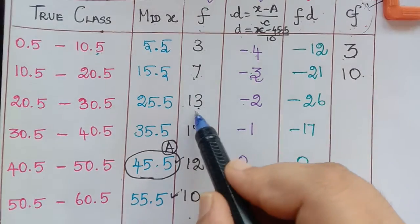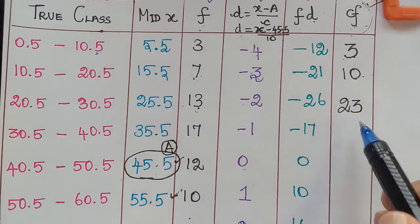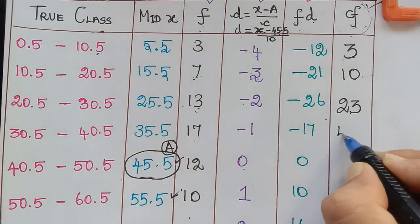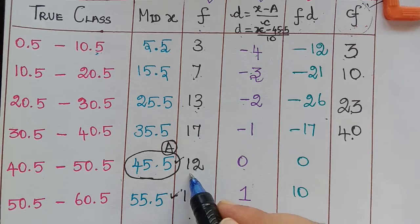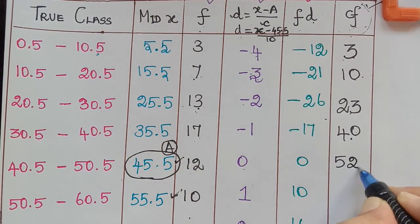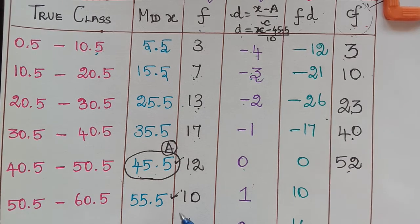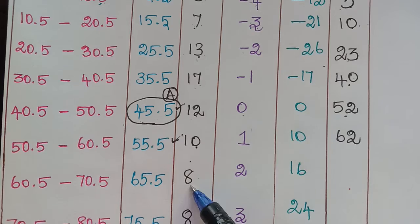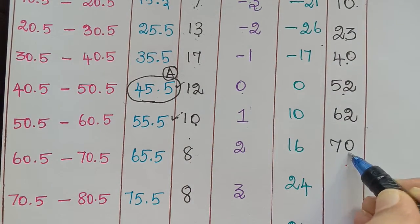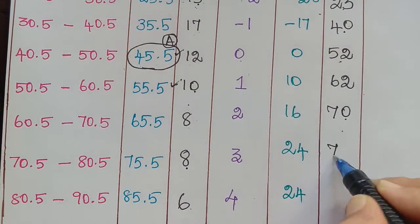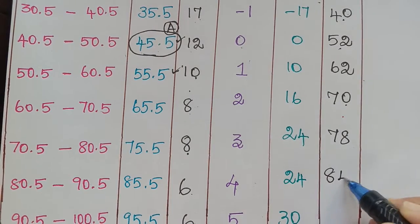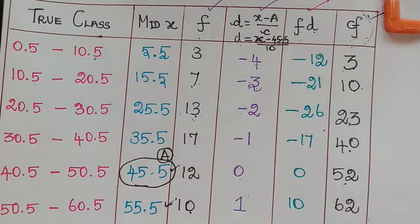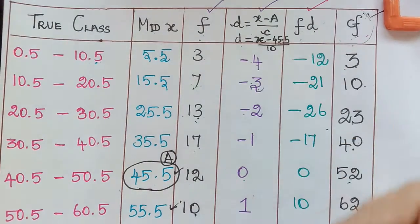Continuing: 10 plus 13 equals 23; 23 plus 17 equals 40; 40 plus 12 equals 52; 52 plus 10 equals 62; 62 plus 8 equals 70; 70 plus 8 equals 78; 78 plus 6 equals 84; and 84 plus 6 equals 90. So these are the cumulative frequencies for the given data.